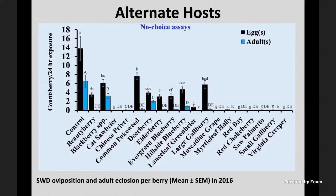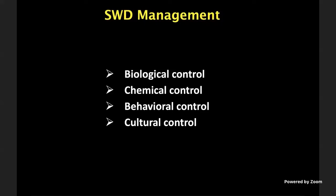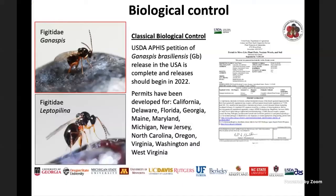Management includes biological, chemical, behavioral, and cultural control. For biological control, this being an invasive species, classical biocontrol is complicated. After 8 to 10 years of work, permits were obtained to release exotic parasitoids imported from native regions of SWD — China and South Korea. Several states are now building up colonies to release in the field. Currently there is no effective biocontrol from native parasitoids.